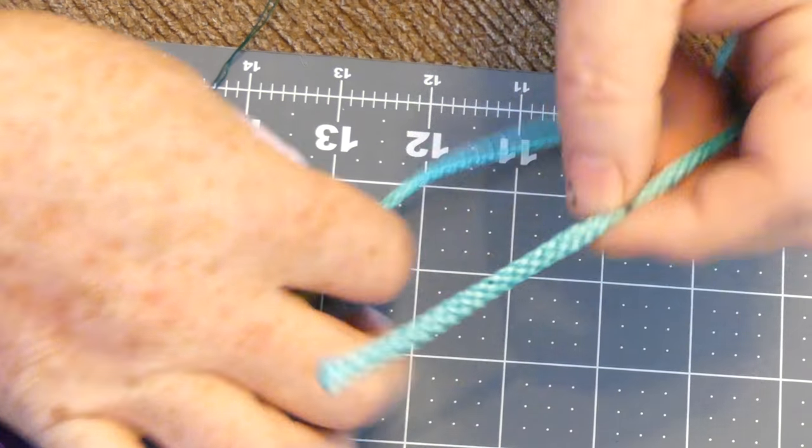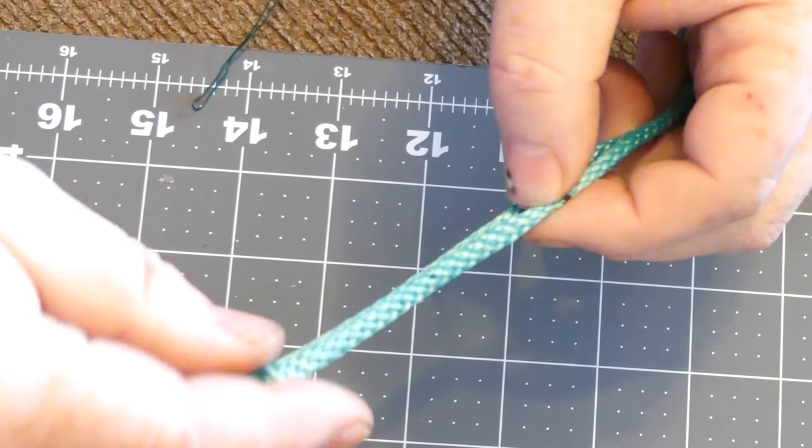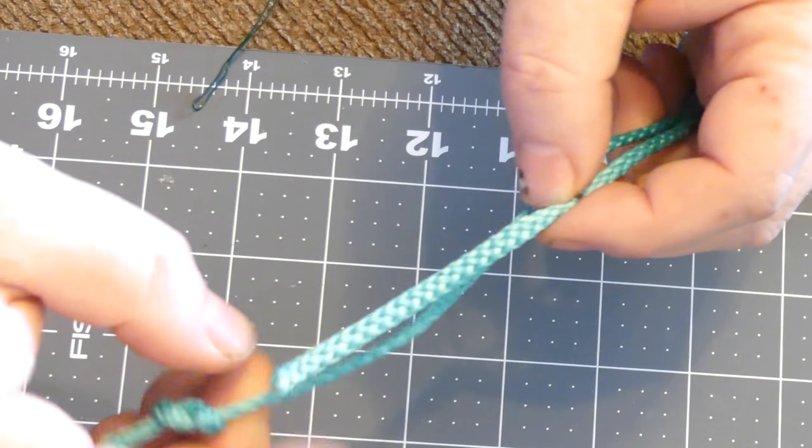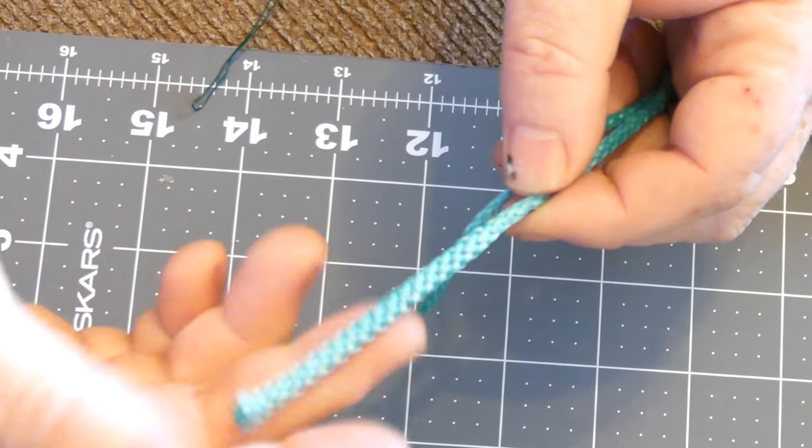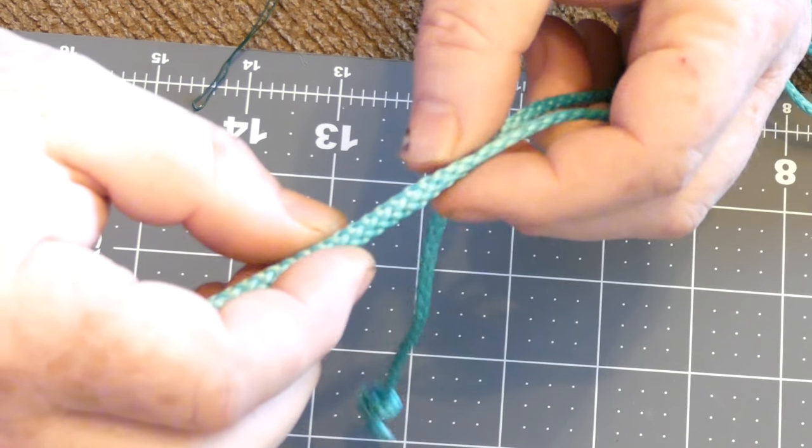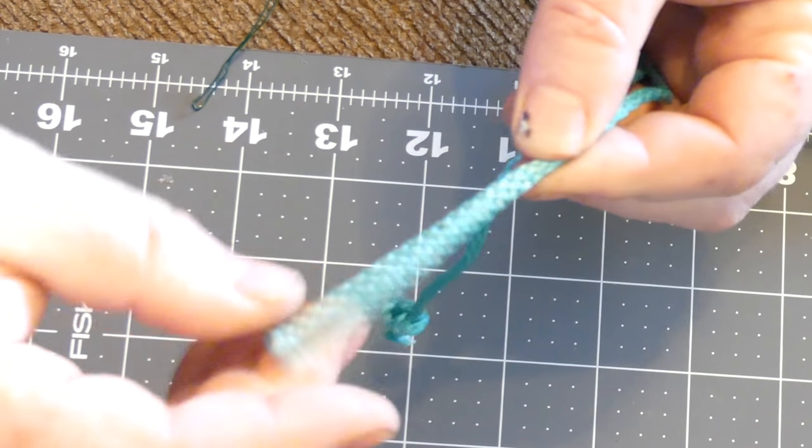But what a lot of people like to do is called a back splice or a full berry like this. It makes it a little bit wider than the normal one, so it might resist going back through on your whoopee sling, but it gives you a little handle. It makes it look nice.